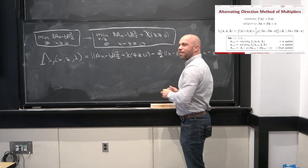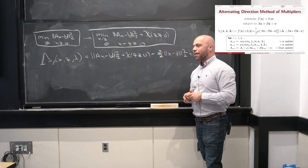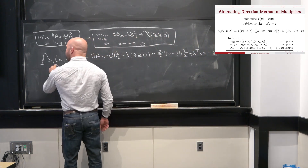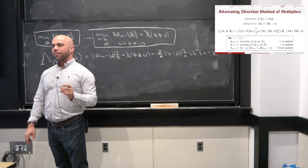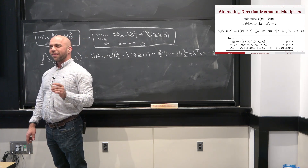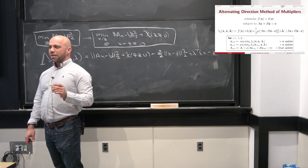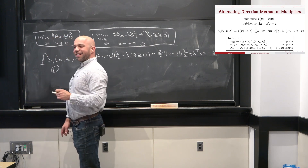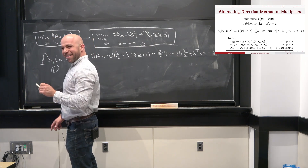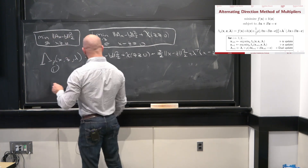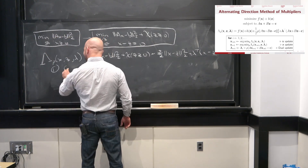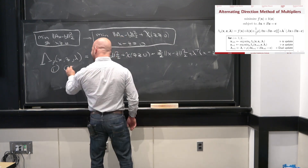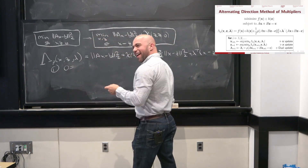Stepping back: the real meat and potatoes of ADMM is very carefully writing our problem in a form where these three steps are each tractable. Our first try put everything in the first step and we didn't know how to solve it. But here we split variables so that the x step and the z step are independently tractable objects. There's a huge class of convex problems — in fact I've never encountered a convex problem that can't be written in some clean ADMM form.